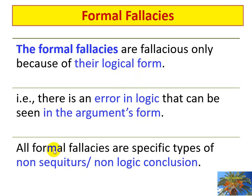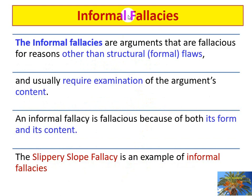All formal fallacies are specific types of non-sequiturs — meaning that due to the bad form of the argument, the premises do not necessarily lead to the conclusion. This is called a non-sequitur conclusion.